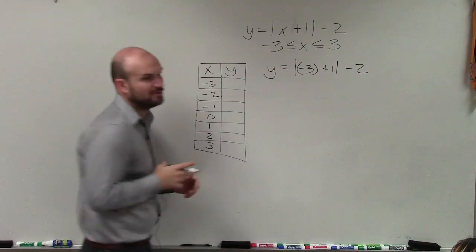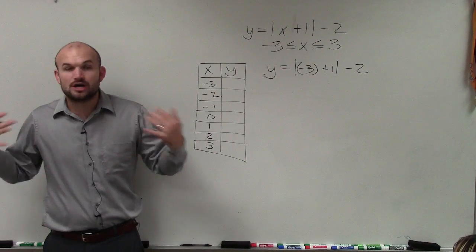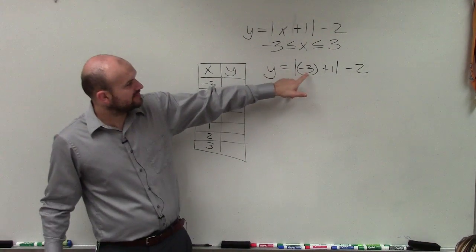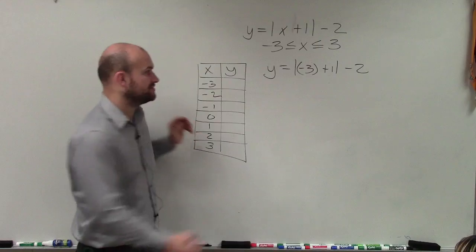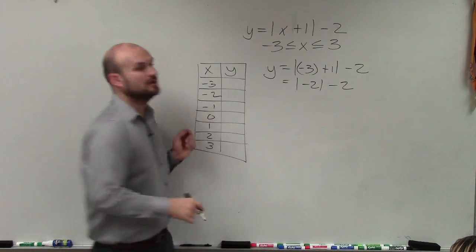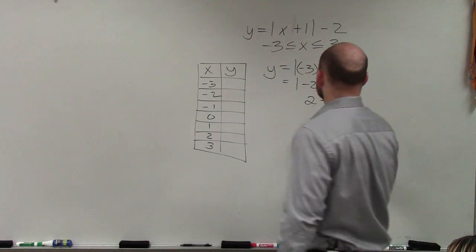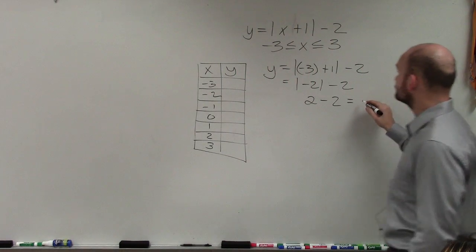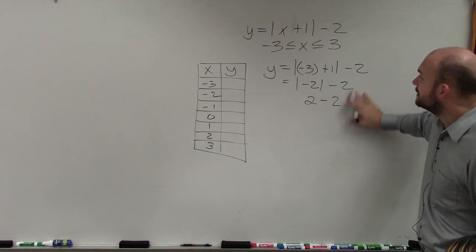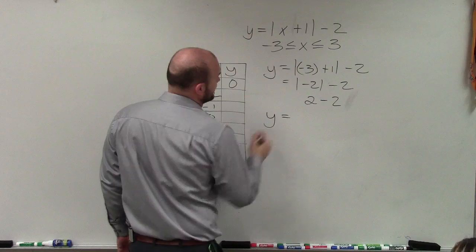Now, we haven't talked too much about absolute value functions, so just remember, absolute value represents the absolute distance, so it's always going to be positive. So I have negative 3 plus 1 is negative 2, so that equals the absolute value of negative 2 minus 2. Well, the absolute value of negative 2 is going to be positive 2 minus 2 equals 0.